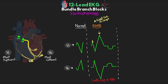With a left bundle branch block, things change differently. The intraventricular septum is normally depolarized from the left bundle branch, but since it's blocked, it may be depolarized in a right-to-left fashion — giving a small negative deflection in V1 and small positive in V6 — though typically these aren't present on the 12-lead with a left bundle branch block. Moving on, the right ventricle is still rapidly depolarized while the much larger left ventricle is slowly depolarized, leading to mean electrical activity that is slow and towards the left — a large wide negative deflection in V1 and a large positive deflection in V6.